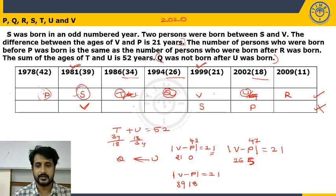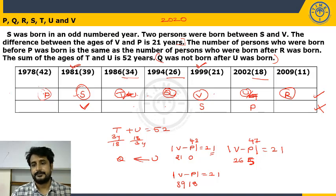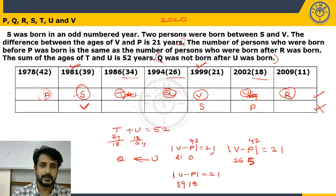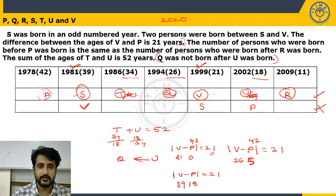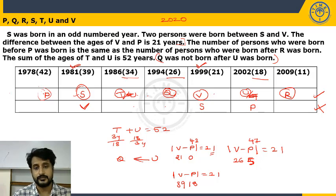Final arrangement in order of birth year: P (1978, age 42), S (1981, age 39), T (1986, age 34), Q (1994, age 26), V (1999, age 21), U (2002, age 18), R (2009, age 11). In prelims, the puzzles will be at an easy level. You should be able to attempt a minimum of 25 questions in reasoning in 20 minutes, sometimes even 30. Reasoning is the easiest section in prelims.